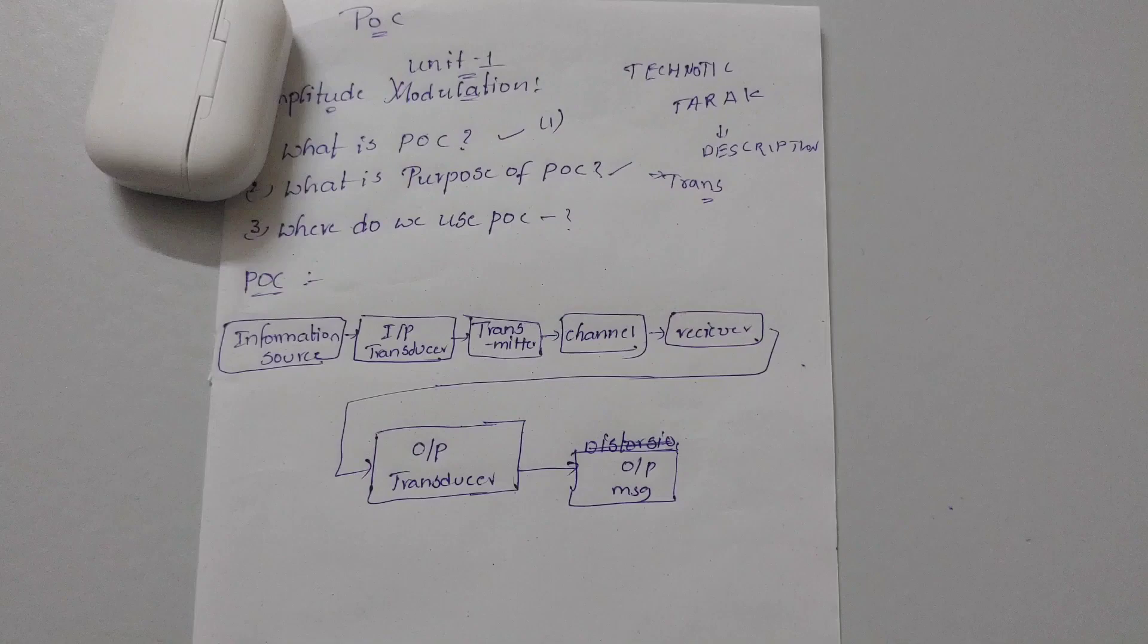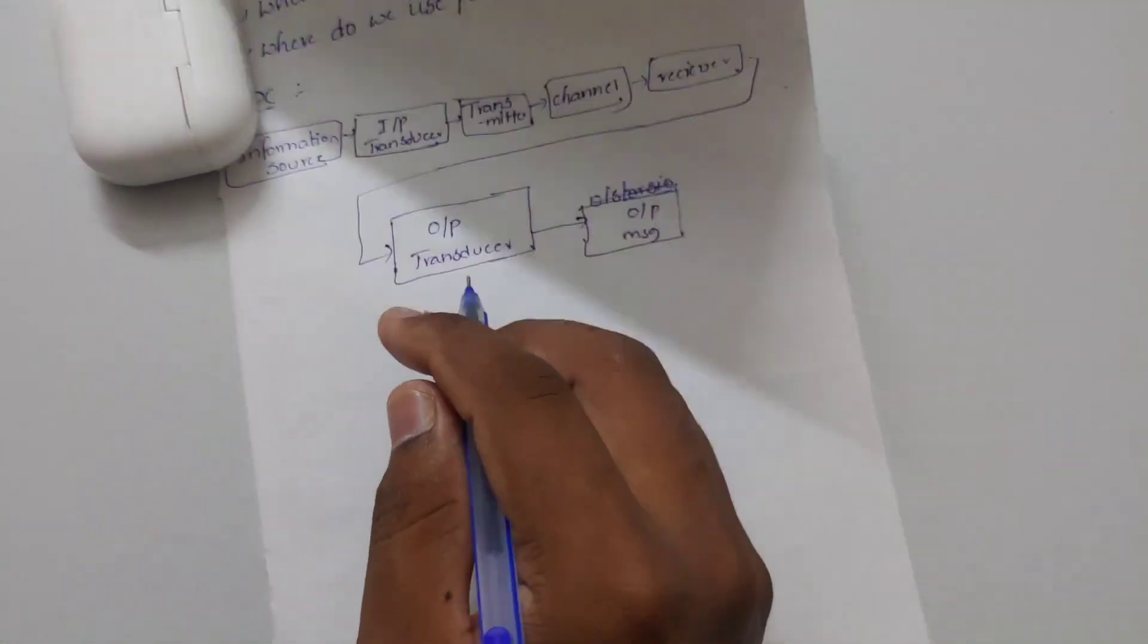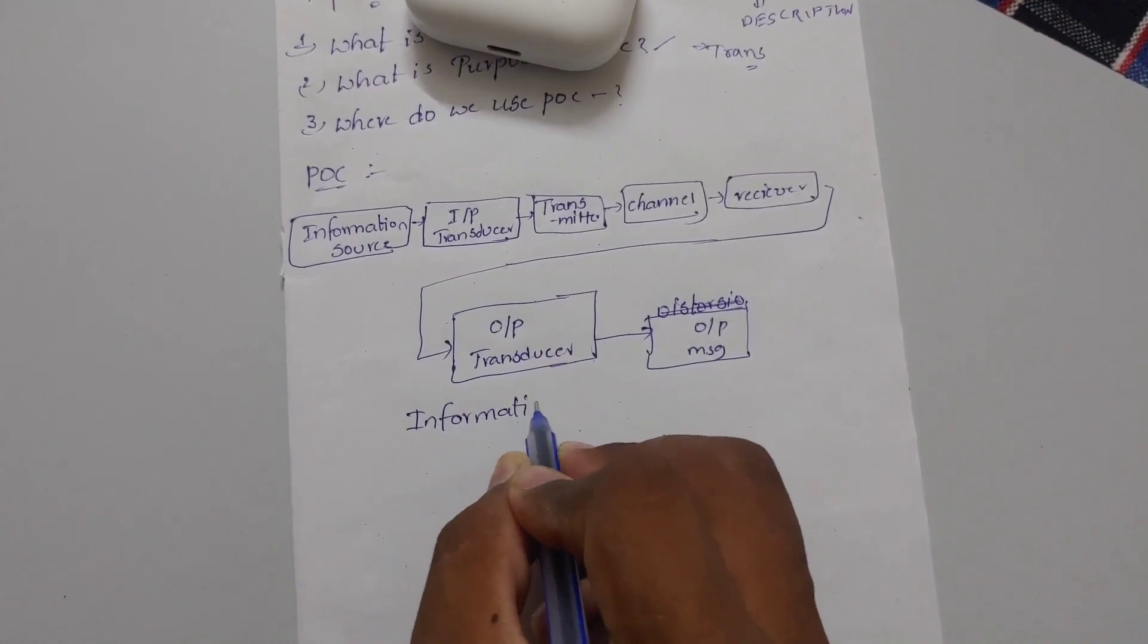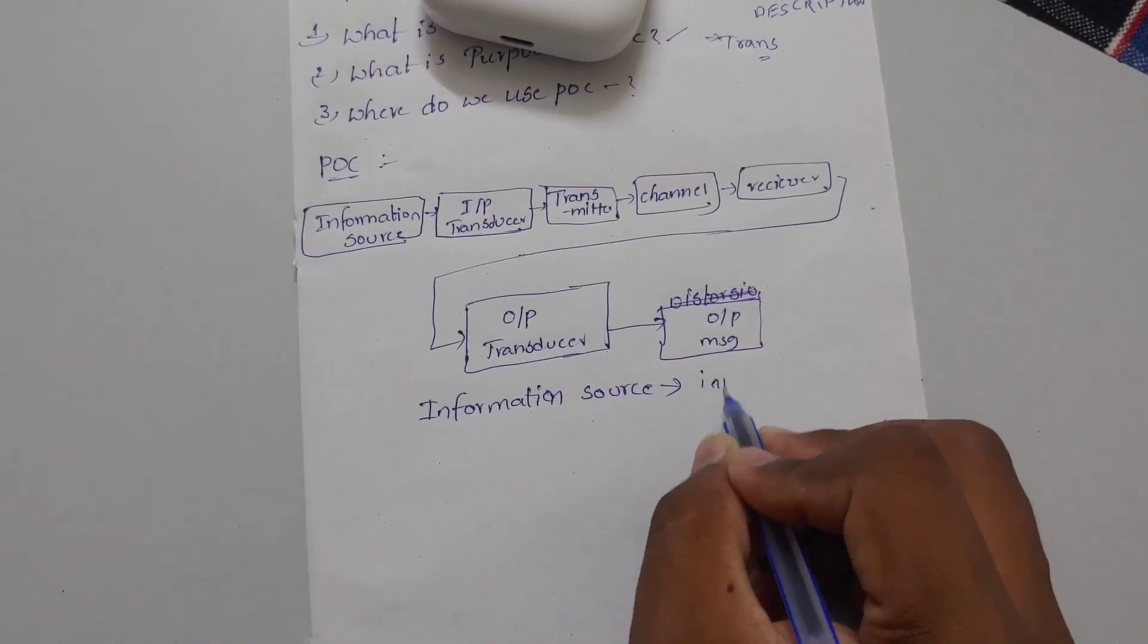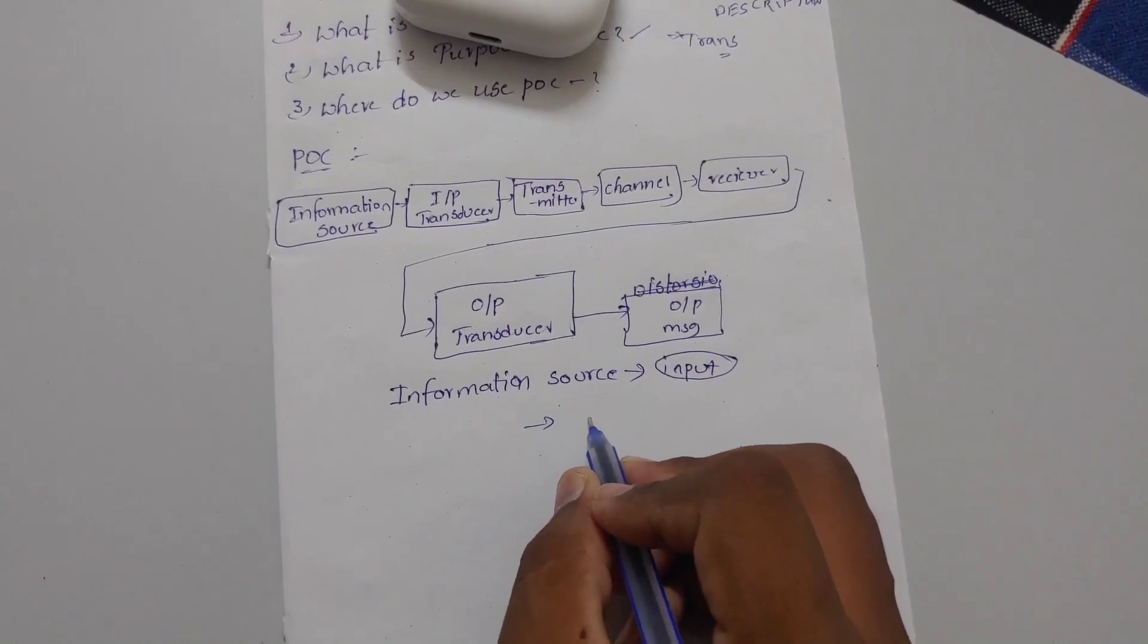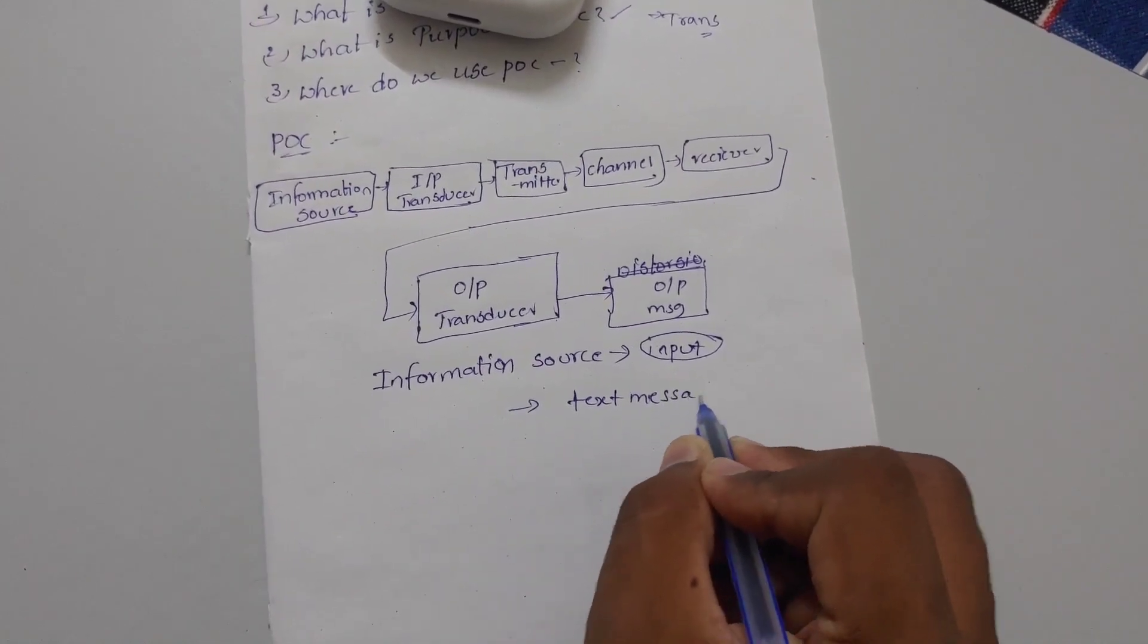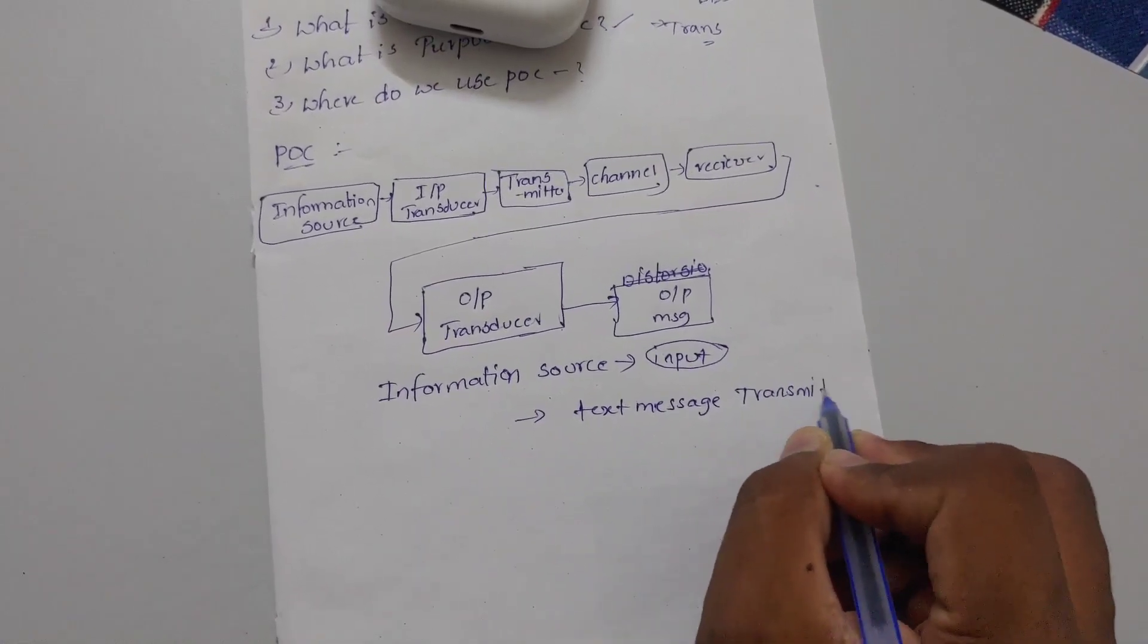Information source - information passing in time is the input. Suppose WhatsApp text message is sent down. The message needs transmission. You need to process it. Principles of communication - the message is the input. Text message goes to the next phase. Next is input transducer.